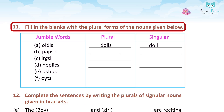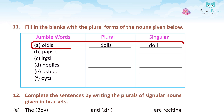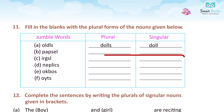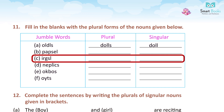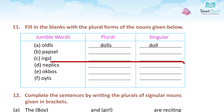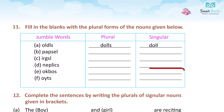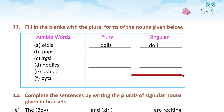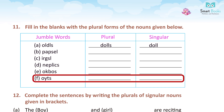Exercise 11. Fill in the blanks with the plural forms of the noun given below. A. Plural: dolls. B. Plural: apples, singular: apple. C. Plural: girls, singular: girl. D. Plural: pencils, singular: pencil. E. Plural: books, singular: book. F. Plural: toys, singular: toy.